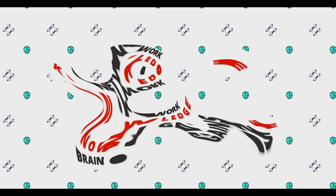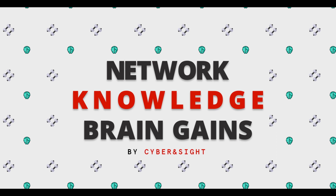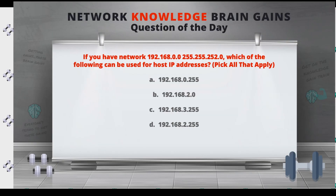We're going to jump in and do our Network Knowledge Brain Gains question of the day. If this is your first time seeing this, we go over a cool networking question at the beginning of the video, then cover the answers at the end. Put what you think the answer is in the comments — I pick some folks to get JBC sticker swag. The question: if you have a network of 192.168.0.0 with a subnet mask of 255.255.252.0, which of the following can be used for host IP addresses? There are four options — it could be one or multiple.